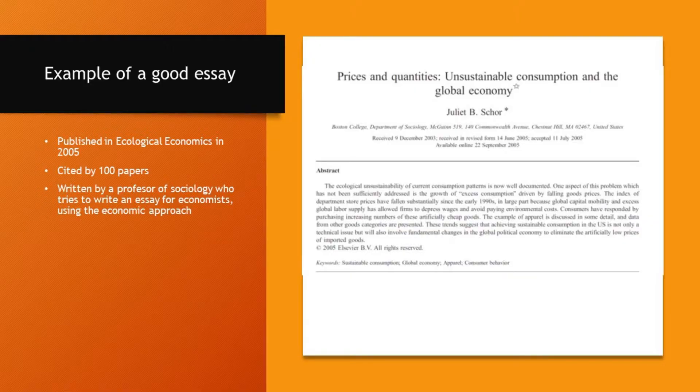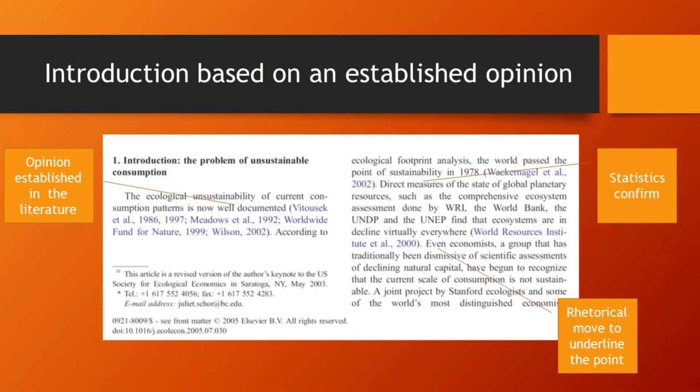Here is an example of a good essay — a short one, something like 10 pages, published in 2005 in Ecological Economics by a sociologist, Julie B. Schor. She tries to write a paper for economists, the way economists read and write. In the introduction, she starts with an established opinion from the economic literature — that current consumption levels and growth are unsustainable. She provides references where economists say that is actually a fact. Then in sentence three, she brings up statistics confirming this, published by reputable institutions.